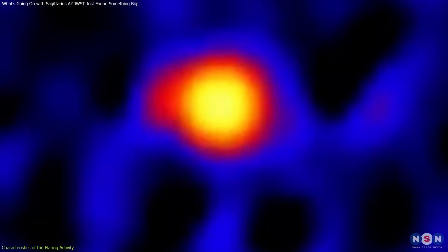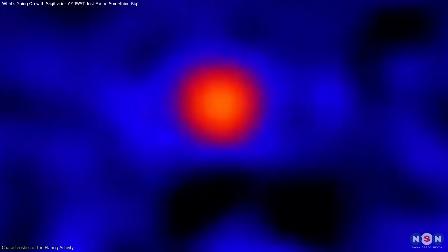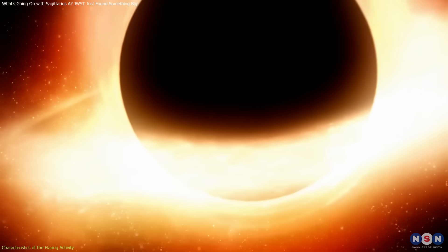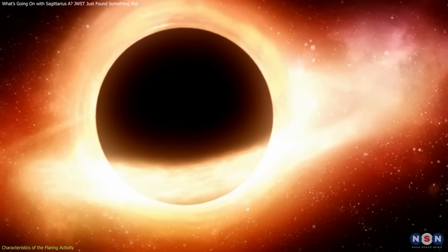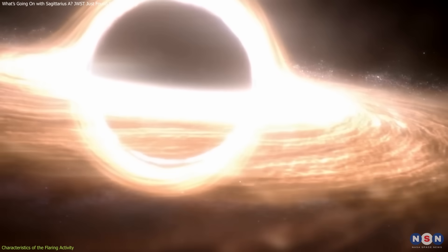These flares range from brief, faint flickers lasting mere seconds to intense eruptions that can persist for extended periods. Such continuous and varied activity suggests a highly dynamic and turbulent environment in the immediate vicinity of the black hole.